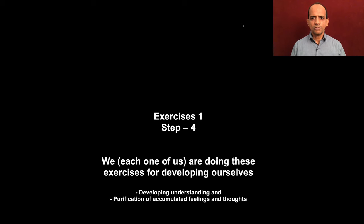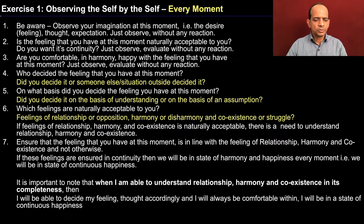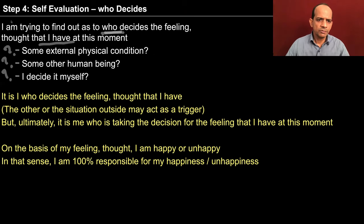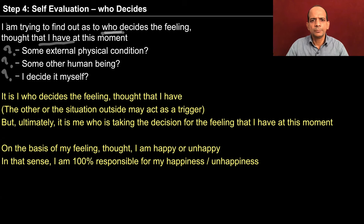We will discuss step 4 now. These are the 7 steps which we are discussing one by one. And gradually we have to develop the awareness to such an extent that we are able to be observant every moment. So in step 4, we are again doing self-evaluation and we are trying to find out who is deciding our feeling. For example, when you start observing your feeling and imagination, you might find that you are not comfortable with yourself — say, you are feeling angry at somebody. The other person misbehaved with you, and now when you remember that incident, you feel angry.